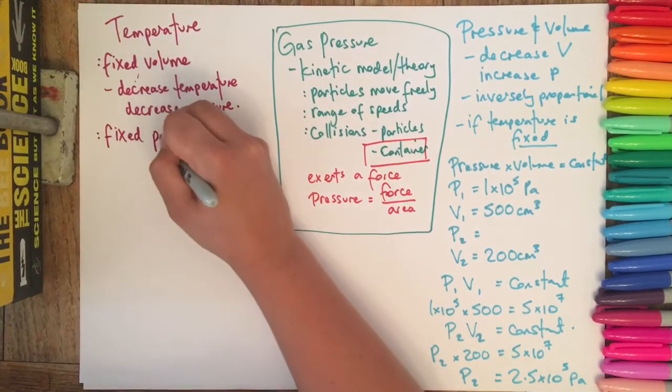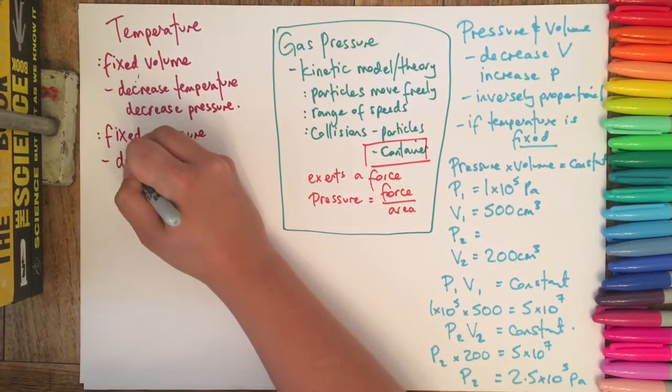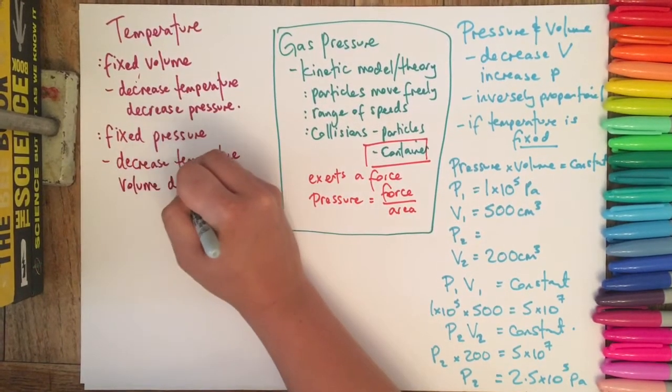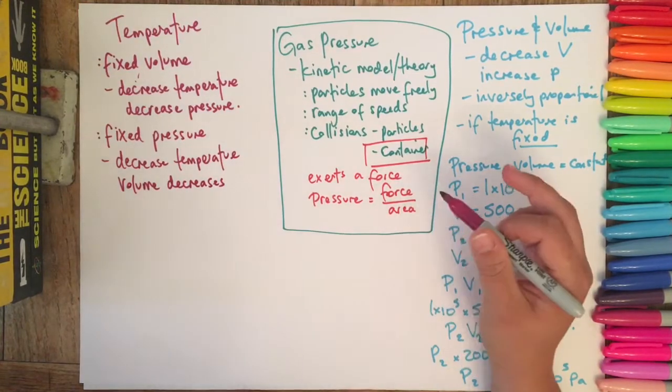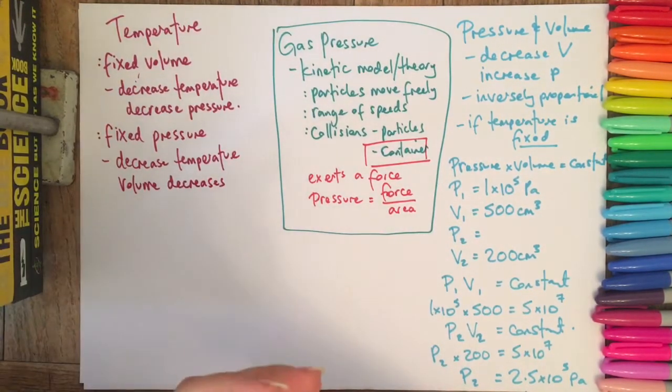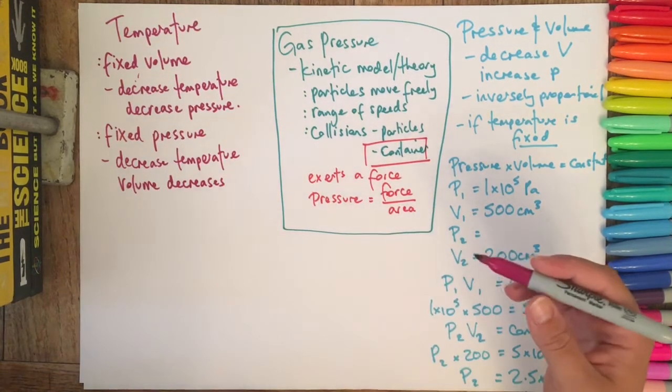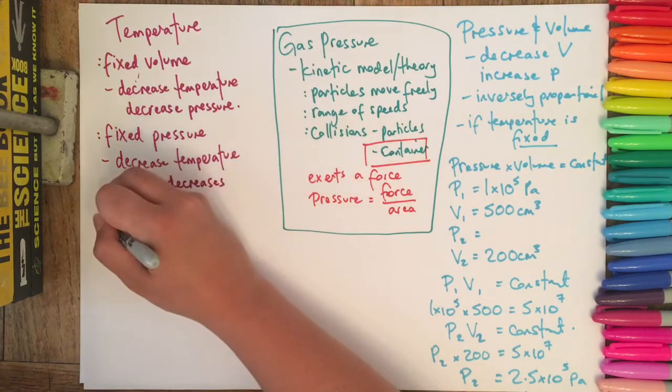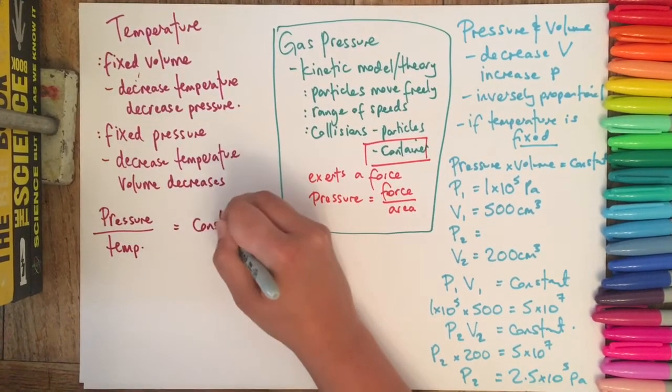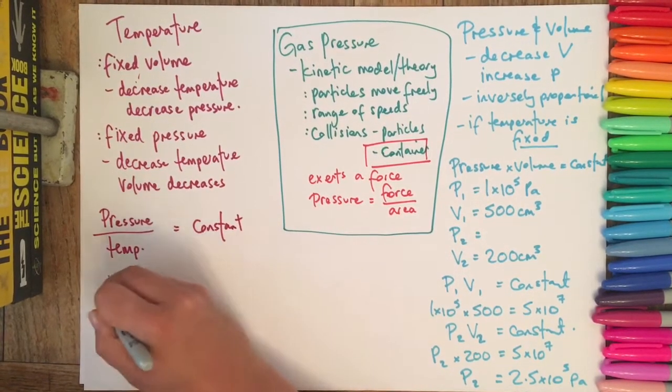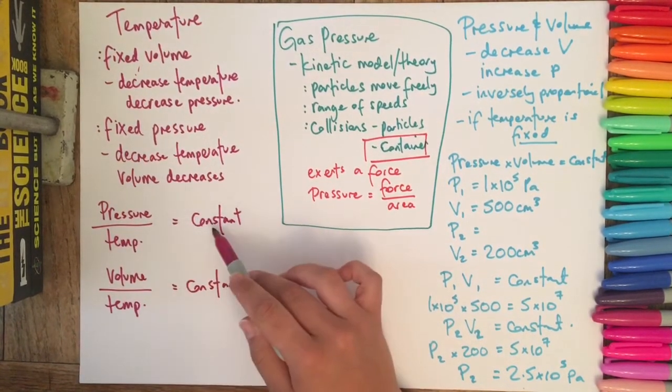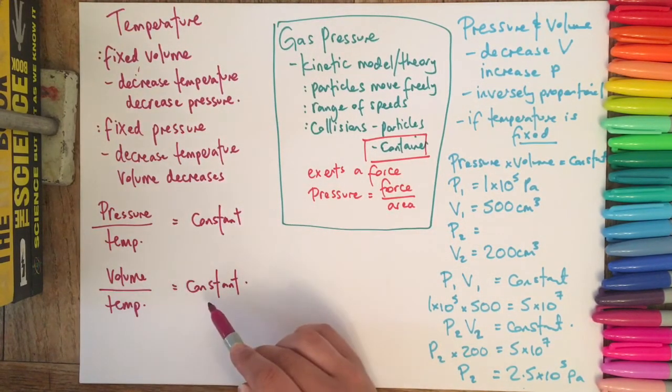So therefore that's what our pressure is. So if there's fewer collisions there's a smaller force over the same area because the volume is the same, so therefore the pressure is going to decrease. And similarly, if we have a fixed pressure, it's the same pattern. If we decrease the temperature then our volume decreases. So you might have seen this, they might have done a demonstration at school perhaps where you sometimes get like a balloon and put that in a freezer and the volume will decrease. There are two equations again that link in with this that you also get given in your booklet, so pressure over temperature is equal to a constant, and then volume over temperature is equal to a constant.